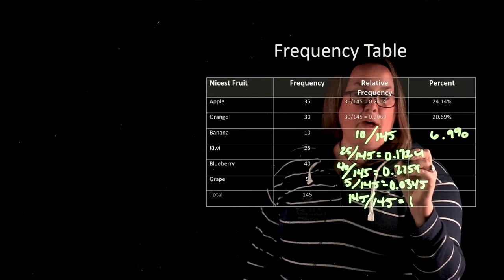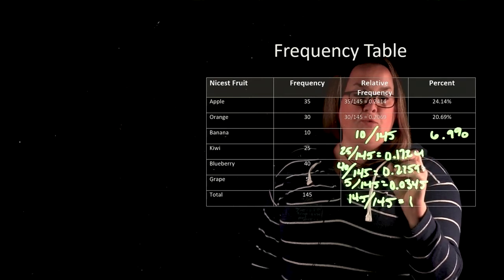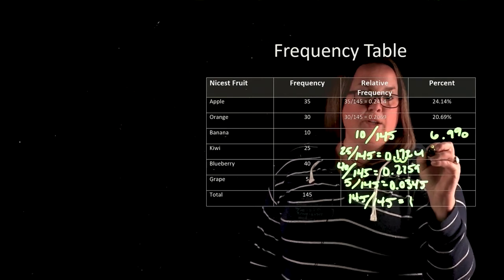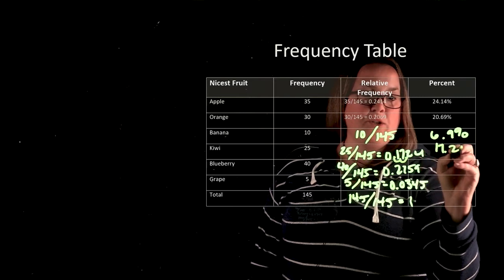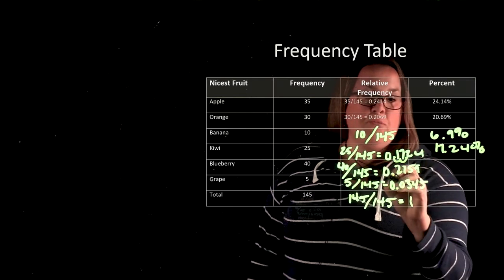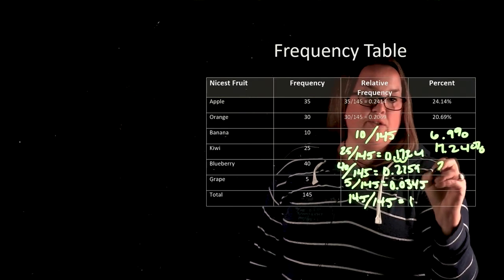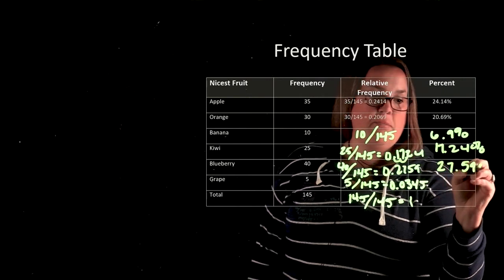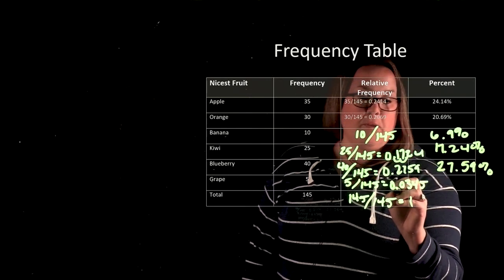If I multiply this by 100, remember you're just moving the decimal value, and so here we would have 17.24 percent. Again you move the decimal two places, so I have 27.59 percent.